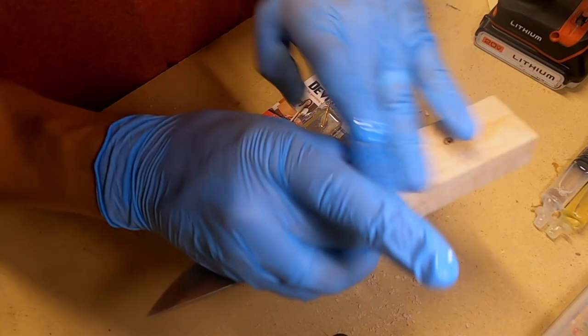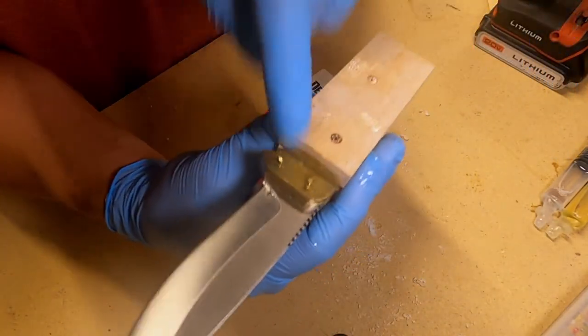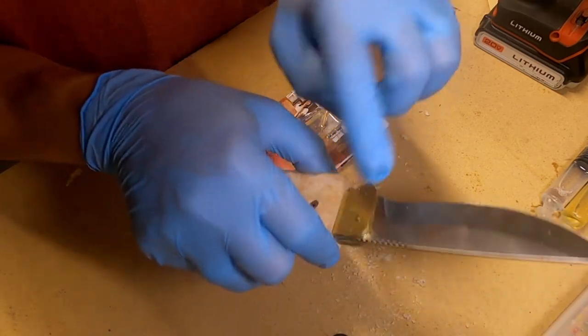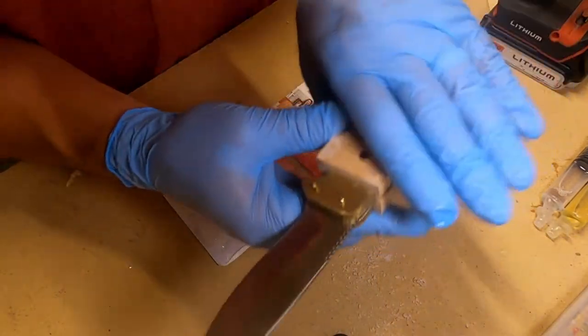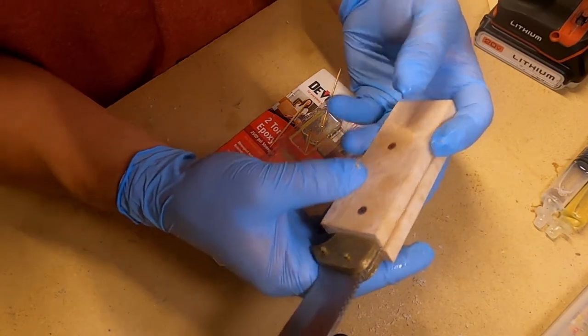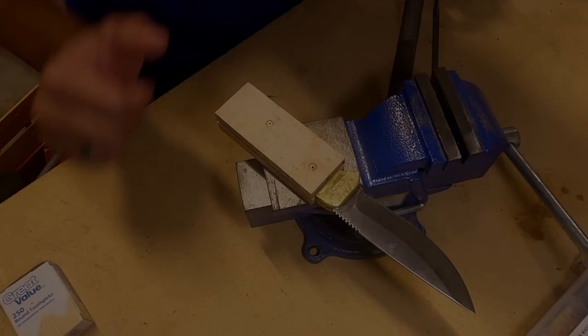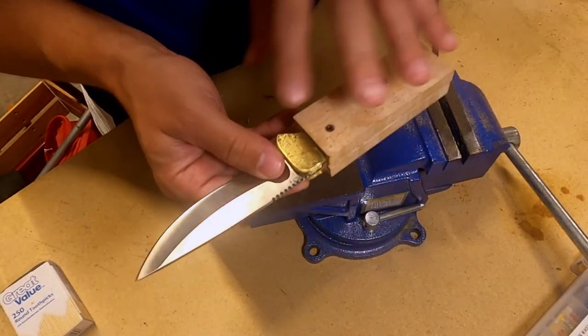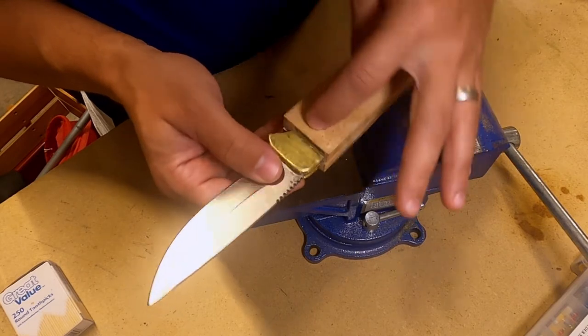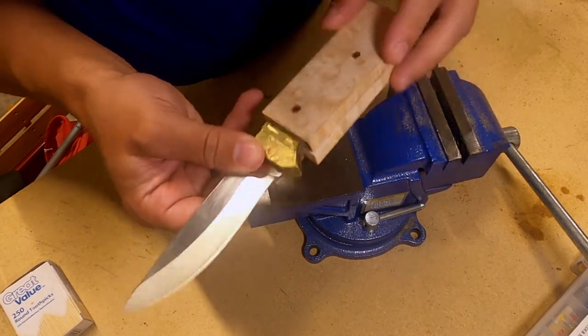Our pins are in, our handle is attached, our bolsters are attached and pinned. Tomorrow we're gonna come back and start shaping. And we're back after all the epoxy has cured on the brass bolsters, on the handle, and on the pins. We're actually ready to start shaping the wood handle.